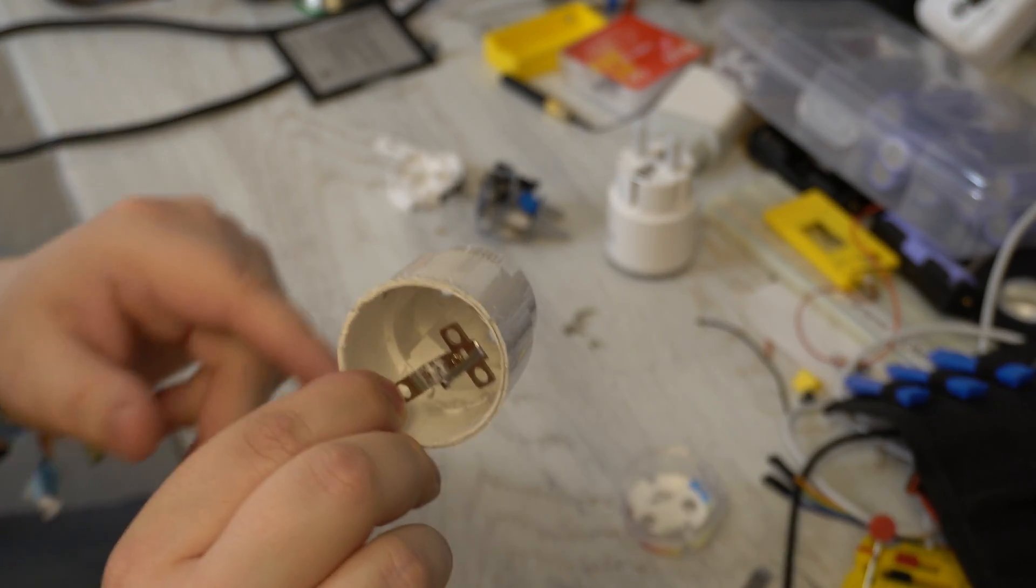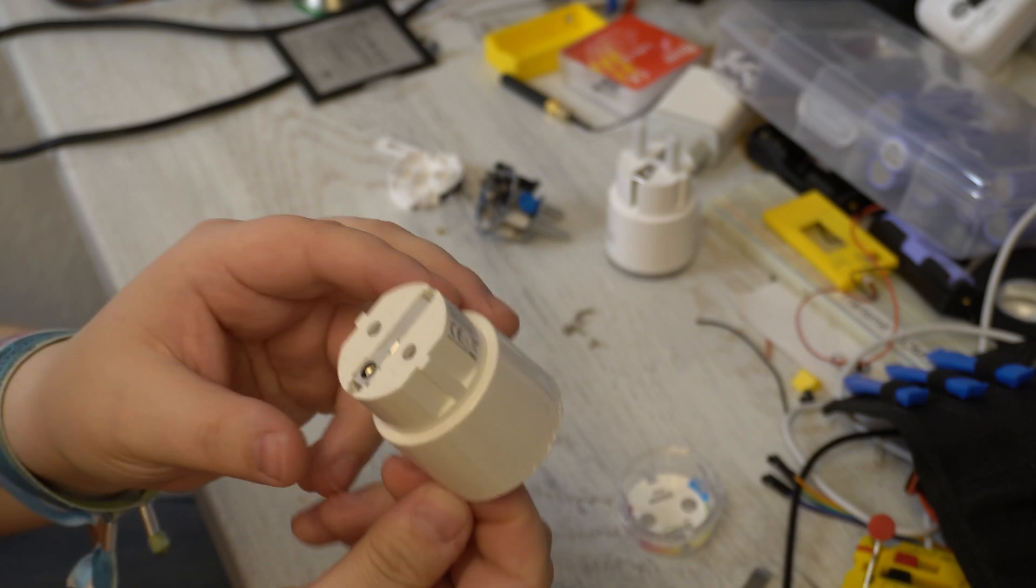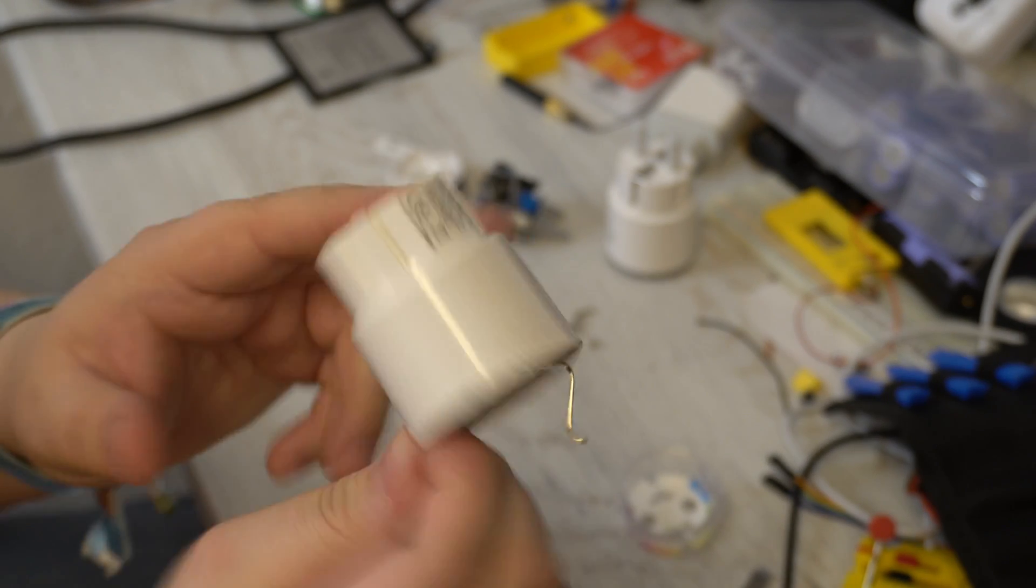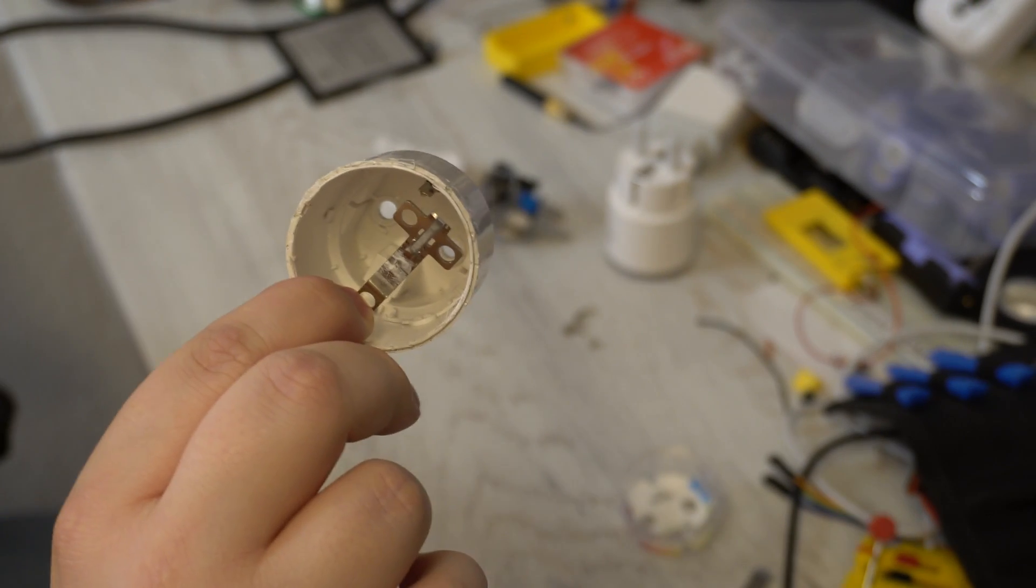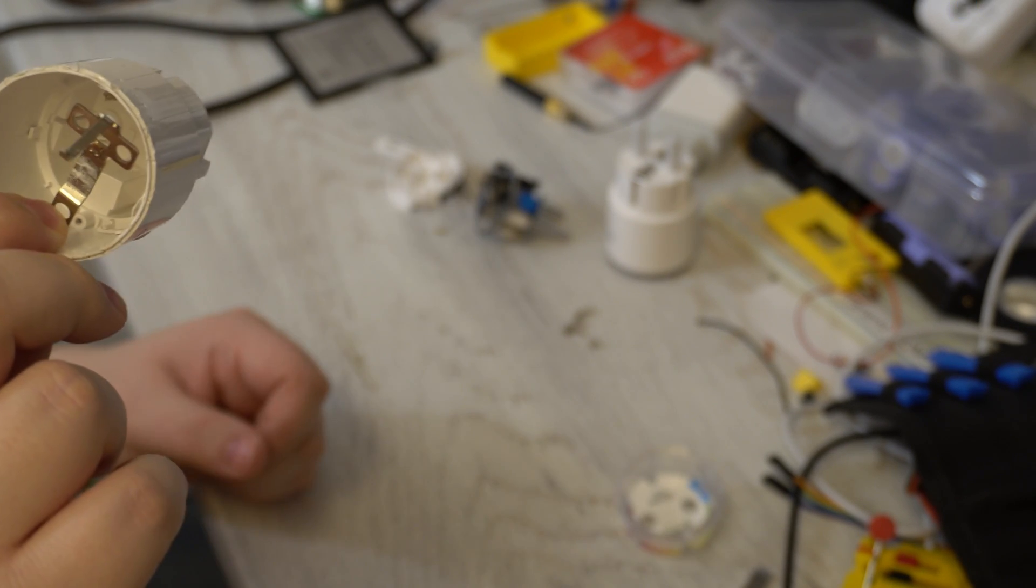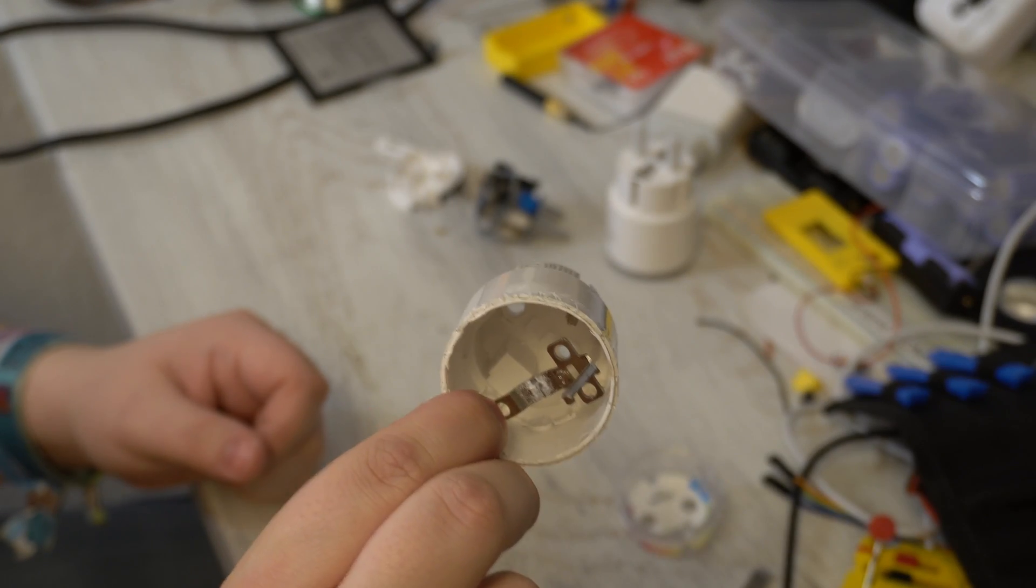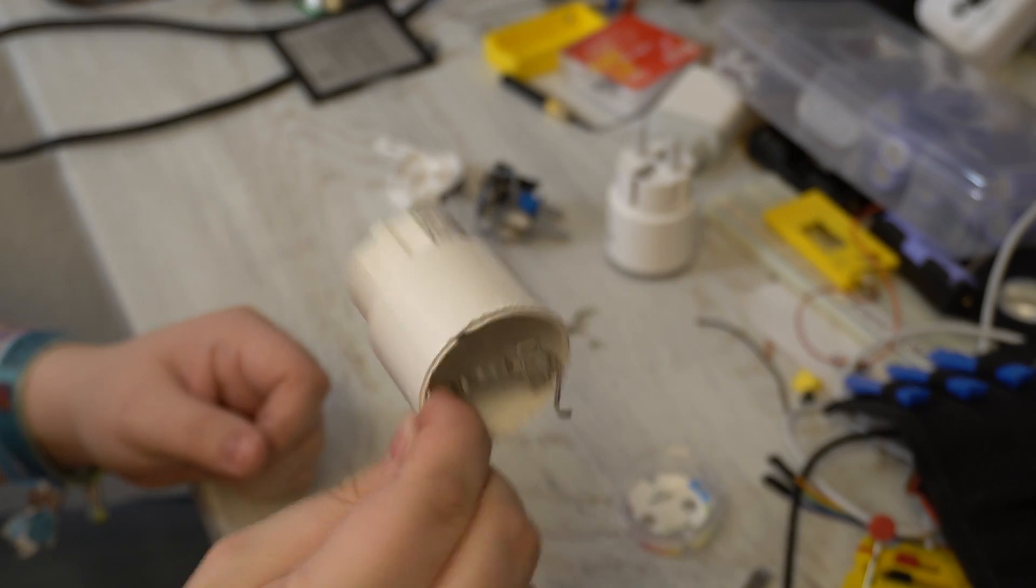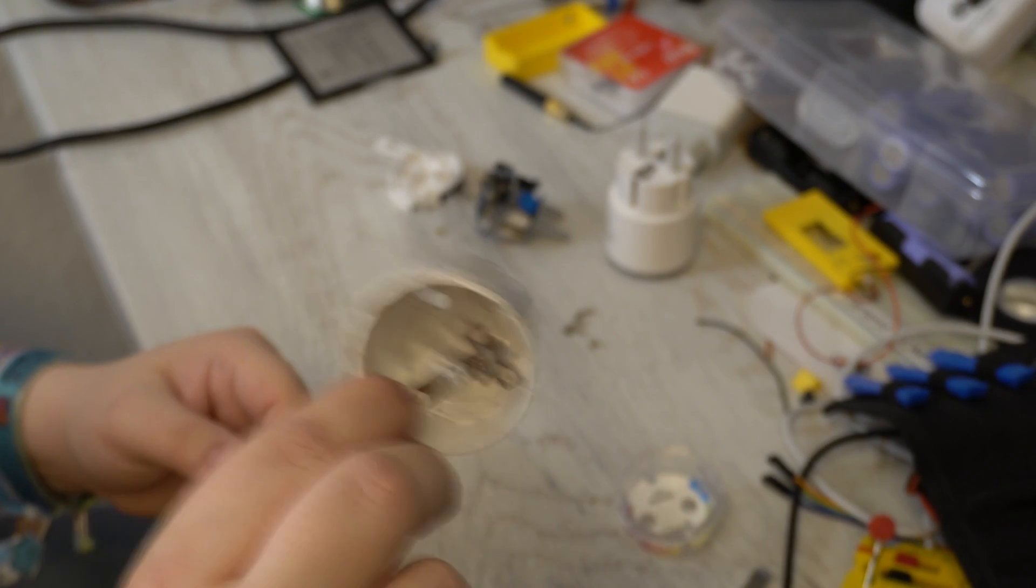And they actually heat-staked the bottom part of the earth. Now, since the earth doesn't have to be switched or should never be switched in such plugs, they simply just heat-staked this. So even if you manage to take these apart properly, you will not be able to put them back together. Which is stupid. Why did they choose it this way?